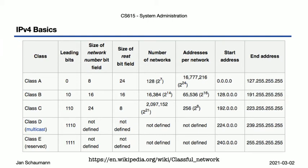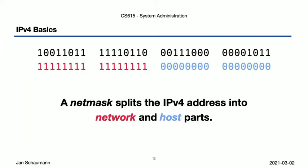If you had a class B IP address, that meant 16 bits network portion and 16 bits host portion, meaning you were on the same broadcast domain as about 64,000 other hosts — that's one big network. Chances are you didn't need such a large network and would have preferred a smaller one. So instead of dividing the network and host portion based on the first few bits, we introduced the concept of a netmask: a second 32-bit number used to mask certain bits in the original address. All the bits that were 1s represent the network portion, and all the bits that were 0 represent the host portion.